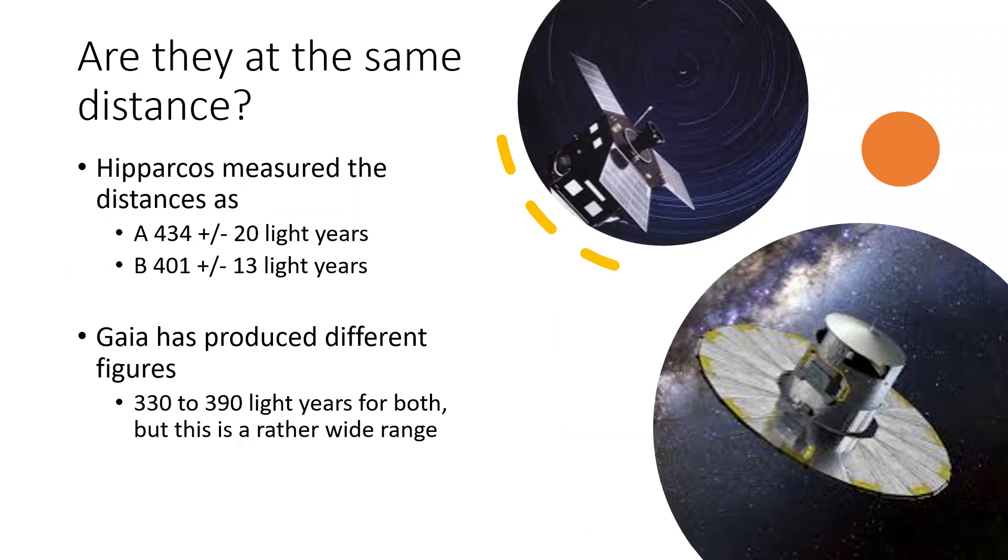More recently, the Gaia satellites had a go and tends to produce better answers. Some of the answers from Hipparcos were not entirely reliable. But Gaia has had a problem with this one as well, and the figures that we have suggest somewhere between 330 and 390 light years, a bit lower than Hipparcos, and that's actually fairly common. Hipparcos seemed to slightly overestimate things. But that widespread of 60 light years really doesn't help us try and identify whether the distances are different or not.